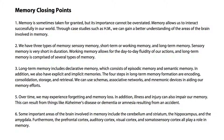Some important areas of the brain involved in memory include the cerebellum and striatum, the hippocampus, and the amygdala. Furthermore, the prefrontal cortex, auditory cortex, visual cortex, and somatosensory cortex all play a role in memory.